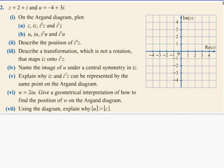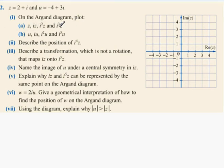So what we have here is question 2 on complex numbers. On the Argand diagram, plot Z, IZ, I squared Z, I cubed Z. What we've got to remember is Z is 2 across 1 up, so 2 across 1 up — that gives us Z.